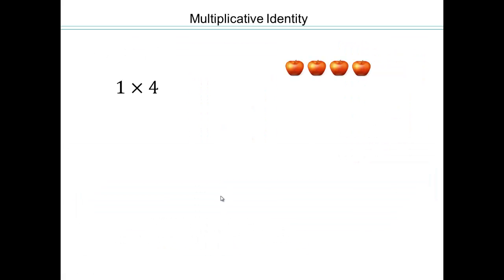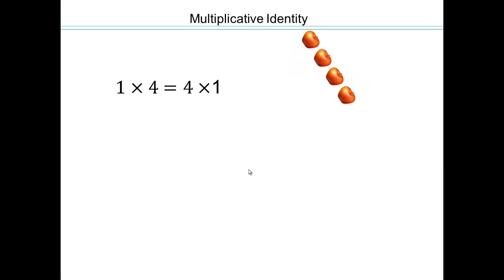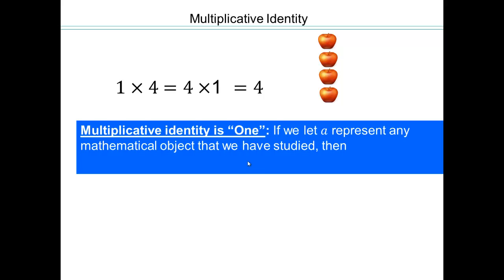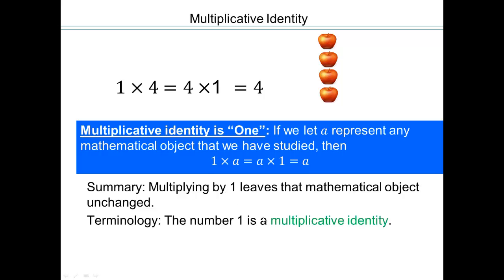Let's talk about multiplicative identity. If you take 1 times 4, which is one row of 4 apples, or 4 times 1, which is 4 rows of 1 apple, either way you have 4 apples. So in general, 1 is our multiplicative identity for all the objects we've studied so far, because 1 times A equals A times 1 equals A. The multiplicative identity is an object that when multiplied by any object in the set leaves that object unchanged. In our case, it's 1.